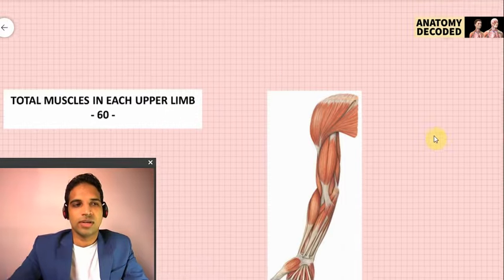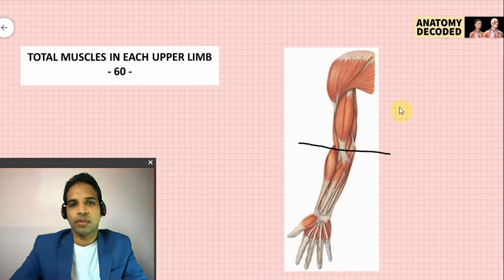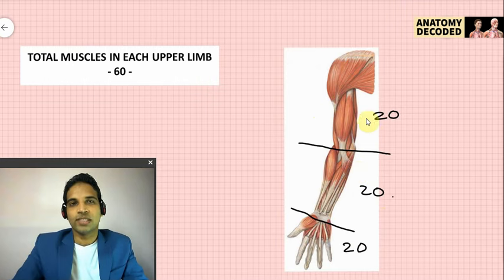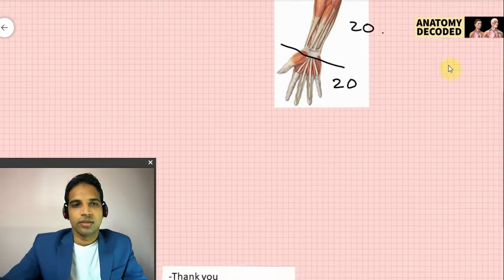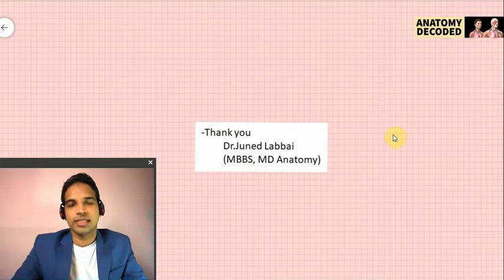We have covered all the muscles of the upper limb. To remember the number of muscles: up to the elbow there are 20 muscles, elbow to wrist there are 20 muscles, and beyond the wrist there are 20 muscles — 60 muscles in total. The exact distribution can be found in another video on this channel. If you have any doubts, ask in the comments section below. Thank you.